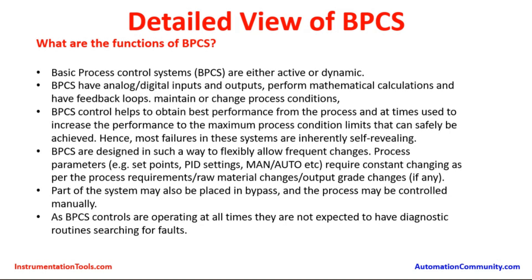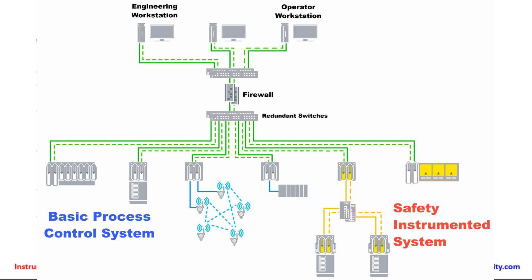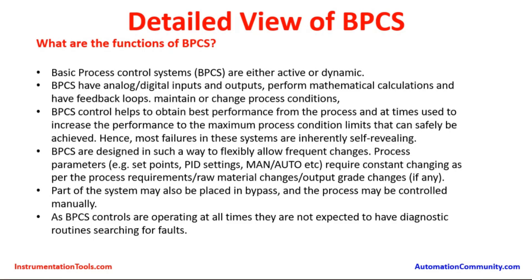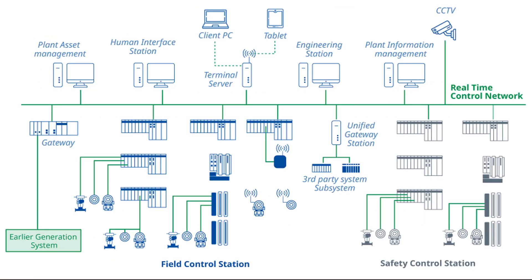Based on the requirement, it helps to adjust the pressure control valve to maintain pressure, or a temperature control valve to maintain the temperature inside a vessel, or adjust the flow. So it is always varying and taking action to control the process to the desired level. BPCS control helps to obtain best performance from the process and at times is used to increase performance to the maximum process condition limits that can safely be achieved. Hence, most failures in these systems are inherently self-revealing.